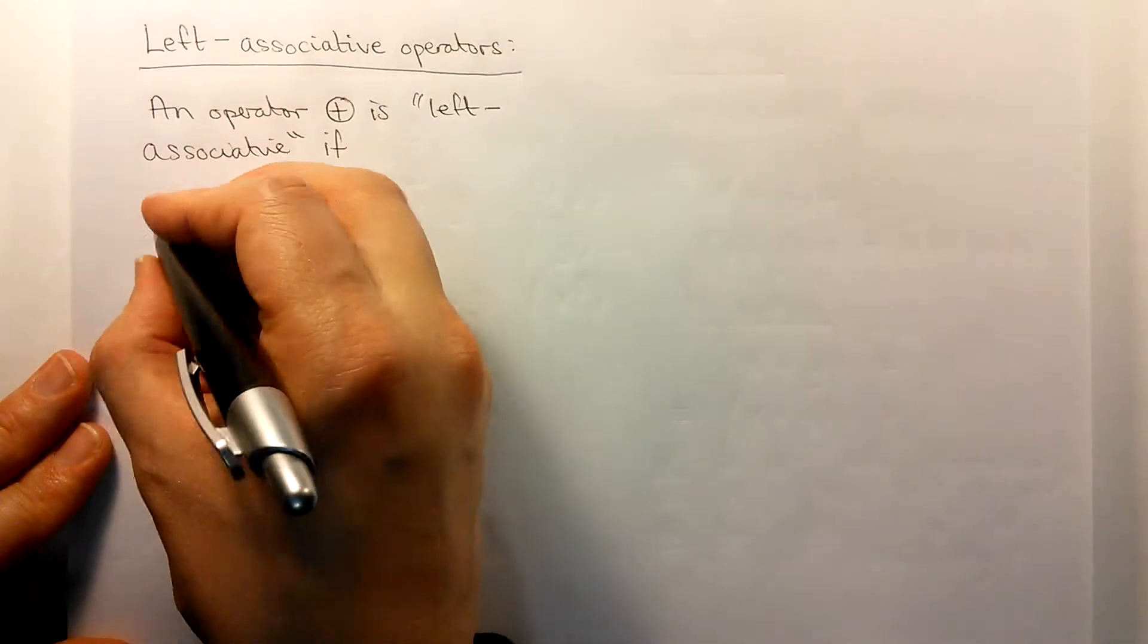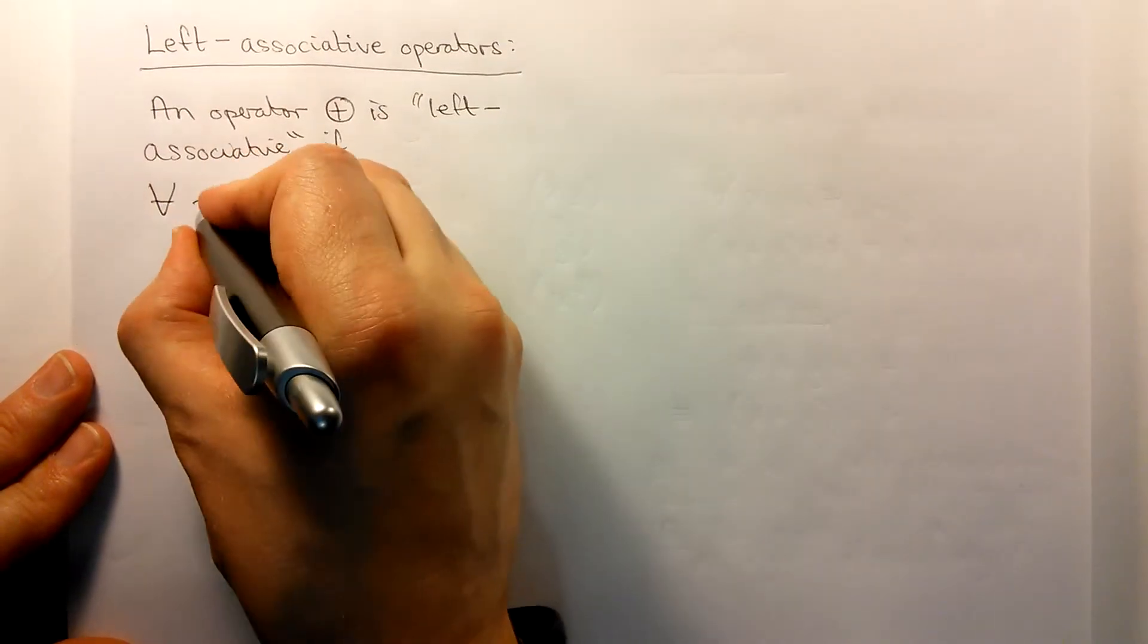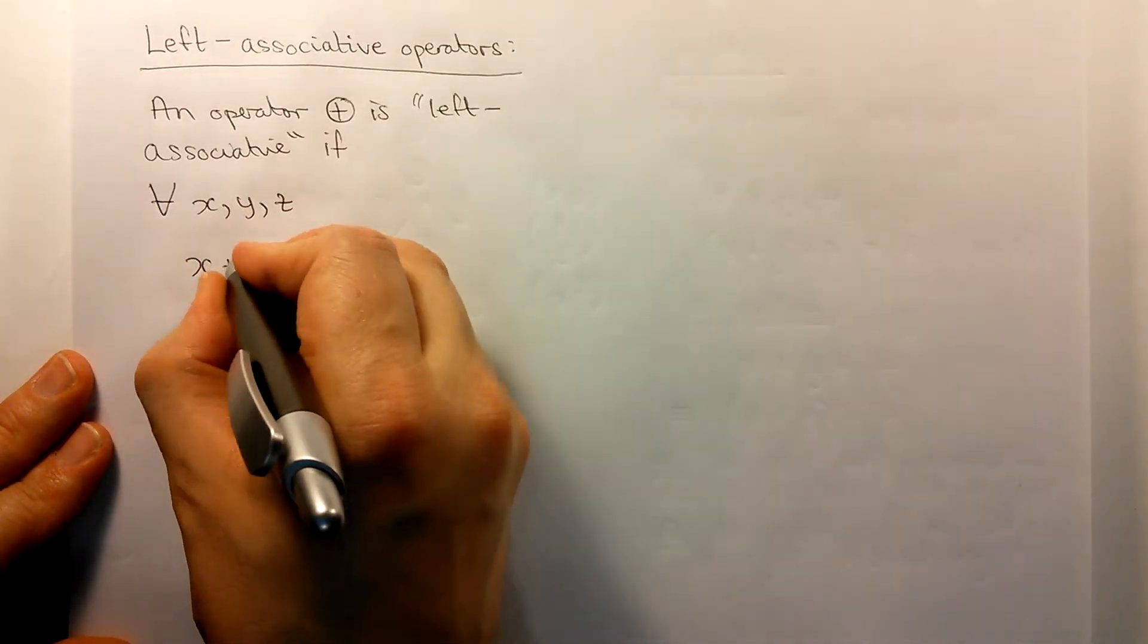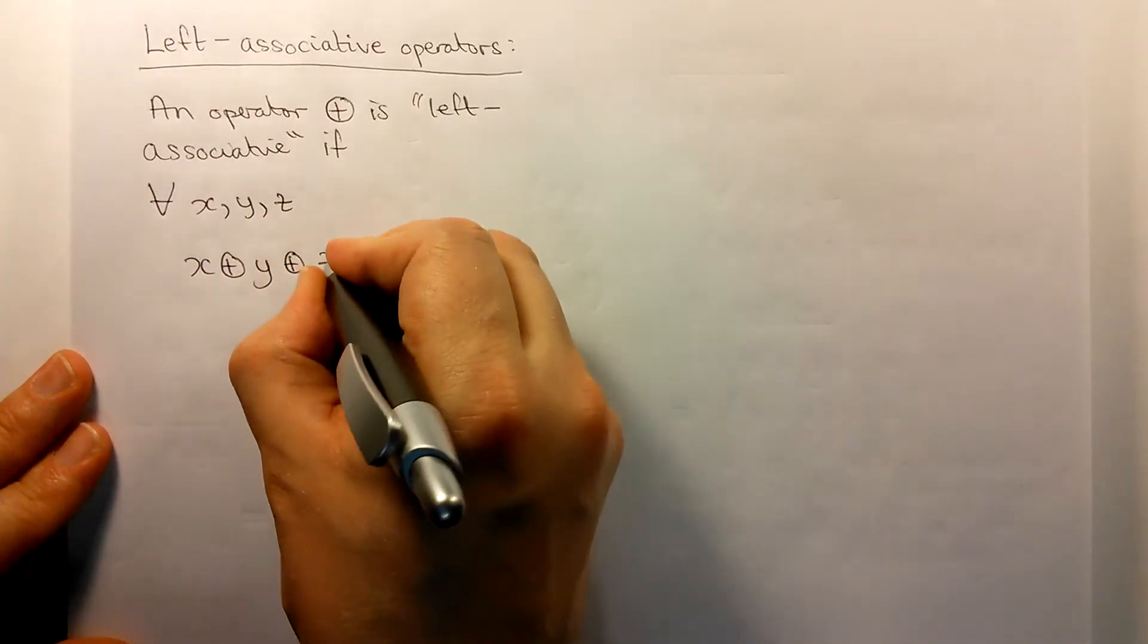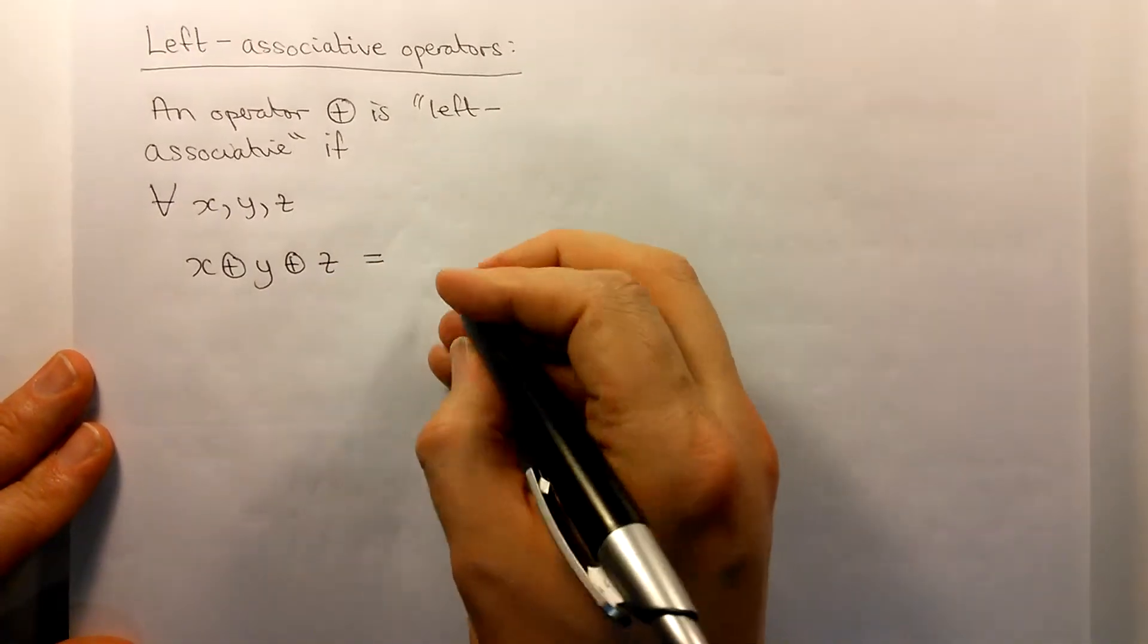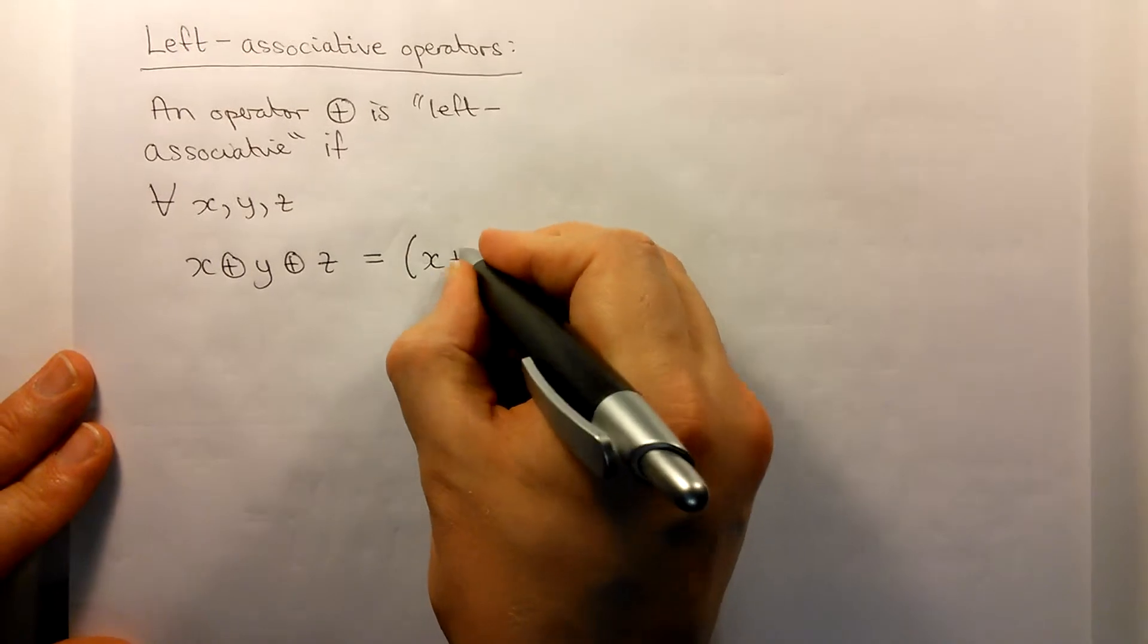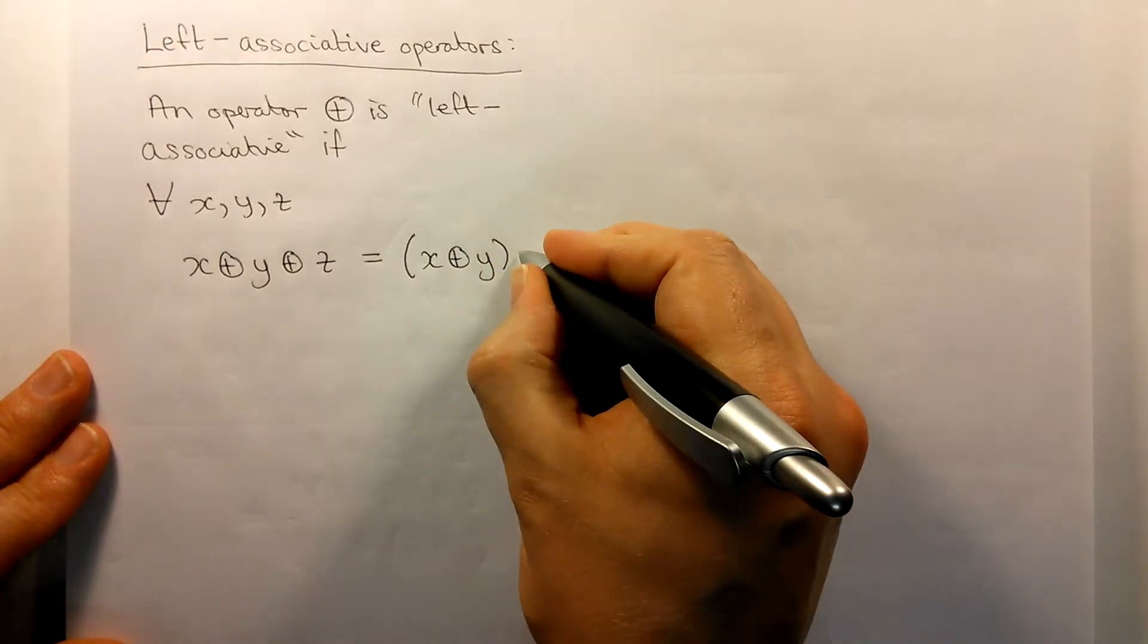If for all possible values x, y and z that we can choose, combining x, y and z together using two copies of that operation, if we do the left hand one first then we say that it's left associative.